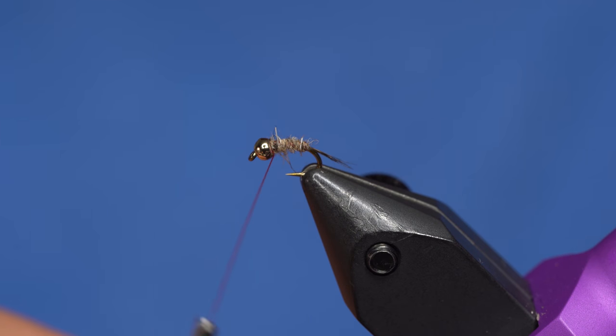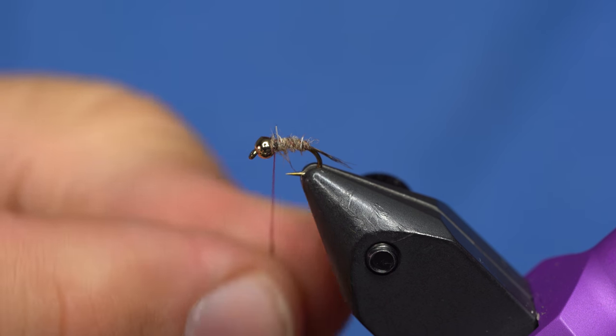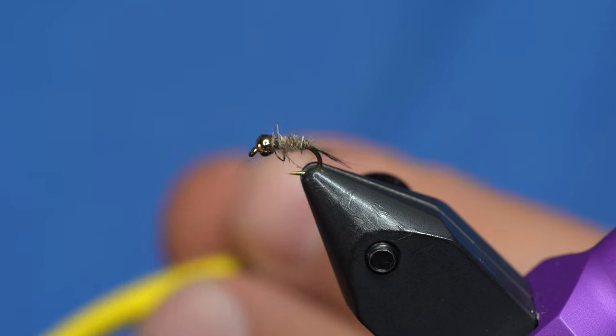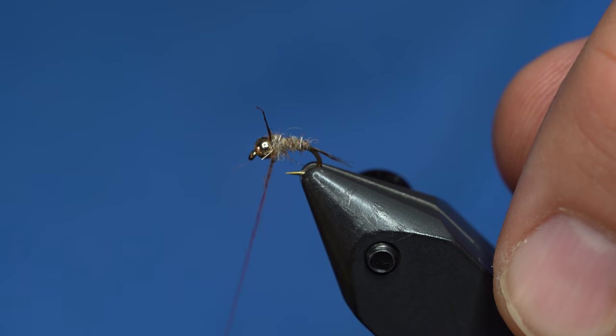It is important to pick off any of the really long guard hairs because it's such a small pattern. Once we're here, I'll just wrap a thorax.